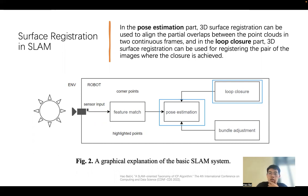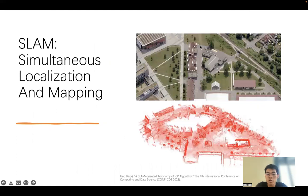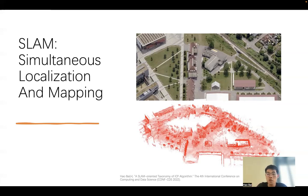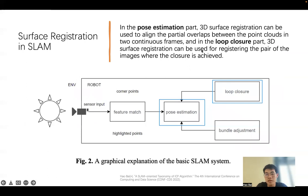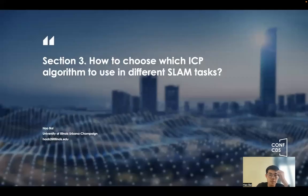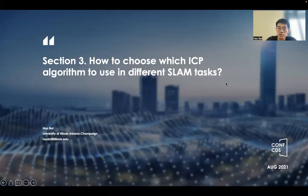The loop closure part is very similar. Say the robot goes on a loop — from one point, around, and back to the start — forming a loop. We need to do surface registration as well, because the sensor data at the return point should match the original. In this paper, we introduce how to choose which ICP algorithm to use in different SLAM tasks.